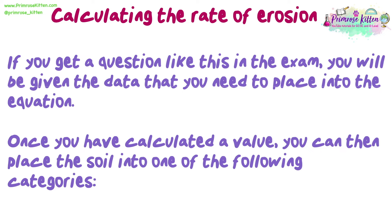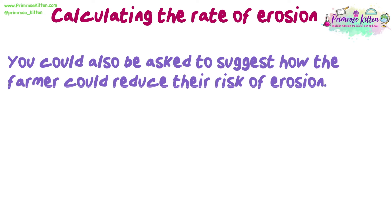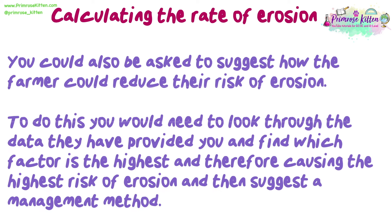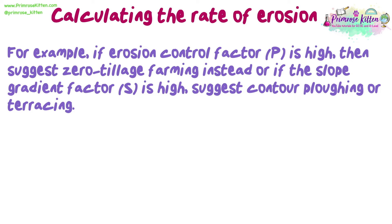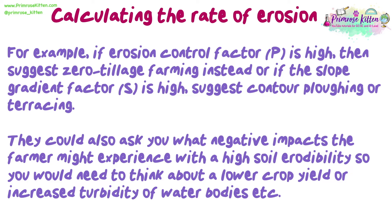If you get a question like this in the exam, you will be given the data you need to place into the equation. Once you have calculated a value, you can place the soil into one of the relevant categories. You could also be asked to suggest how the farmer could reduce their risk of erosion — look through the data provided, find which factor is highest and therefore causing the highest risk, and suggest a management method. For example, if the erosion control factor P is high, you could suggest zero tillage farming. Or if the slope gradient factor S is high, you could suggest contour ploughing or terracing. You could also be asked about the negative impacts of high soil erodibility, such as lower crop yield or increased turbidity of water bodies.